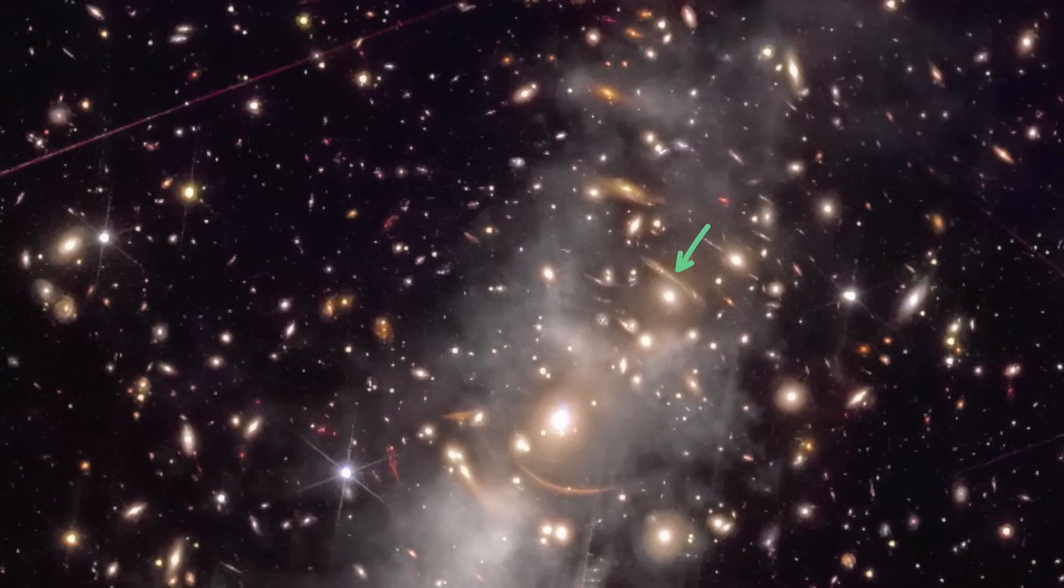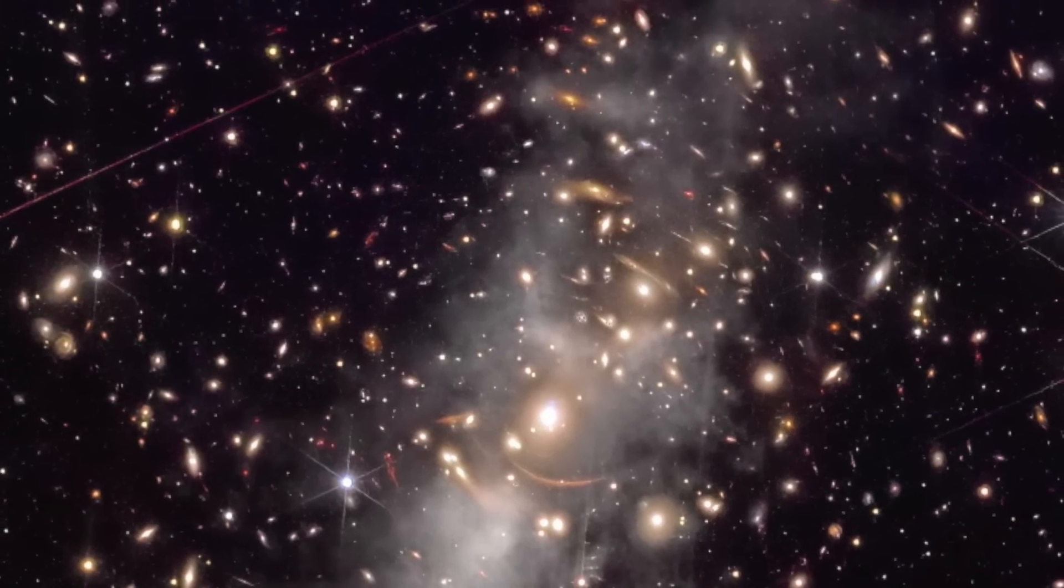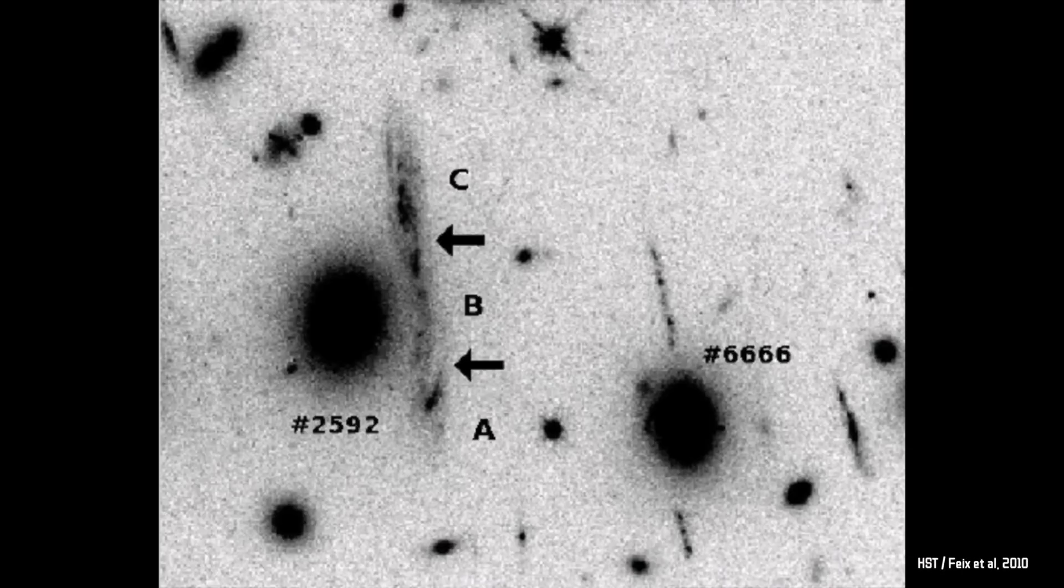And a famous example is this straight arc here. This remarkably straight arc has two breaks, dividing it into three segments of roughly equal brightness. They're all believed to be images of the same galaxy. It's multiple lenses and strong lensing arcs like these ones that provide valuable constraints on the distribution of dark matter, and it allows us to model the distribution of mass in the cluster.